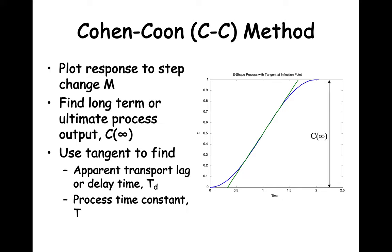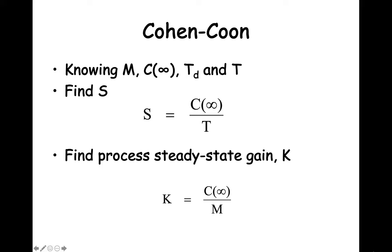Then we find the apparent transport lag. The transport lag Td is the time between time T equals 0 and the time when the tangent crosses 0 output. The next thing to find is the process time constant T. The process time constant is the time between when the tangent crossed 0 and when it crossed C infinity. Now that we know M, C infinity, Td, and T, we can calculate the tangent line slope S, where S equals C infinity over T. We can also calculate the process steady state gain K, which is C infinity over M.